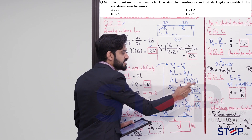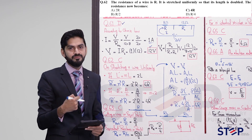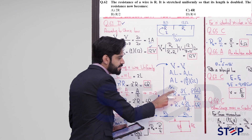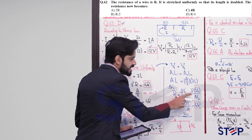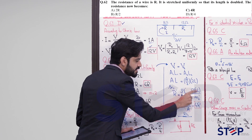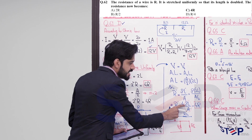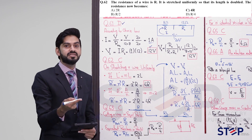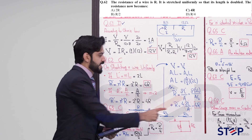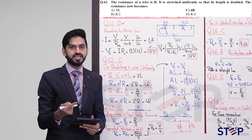From the statement, length has doubled, so area automatically becomes half. By definition, resistance R = ρL/A. Putting final parameters: length becomes 2L, area becomes A/2. The 2 in the denominator moves up, giving R' = 4ρL/A. Since ρL/A equals the initial resistance R, the final resistance R' = 4R — four times the initial resistance.